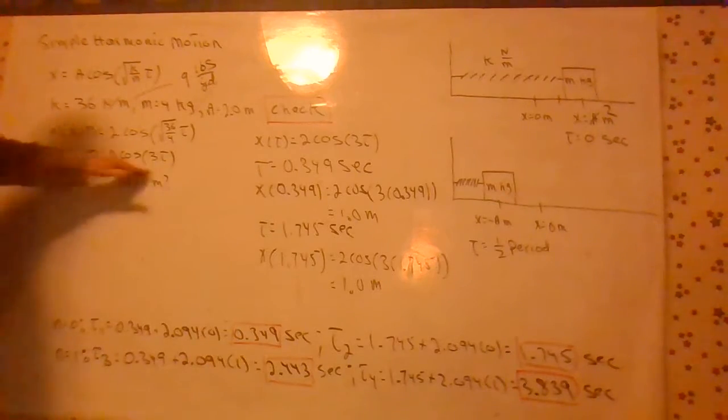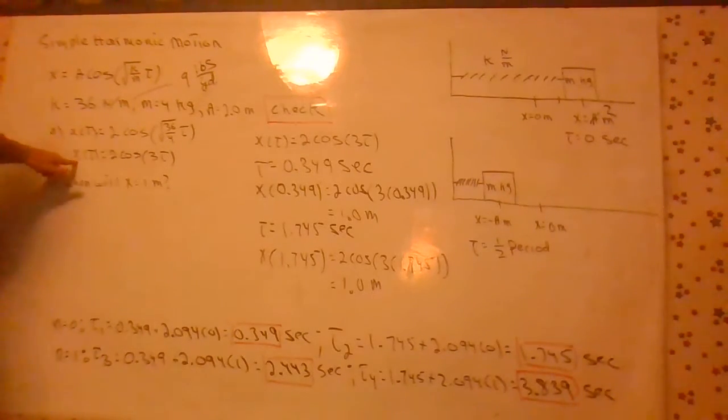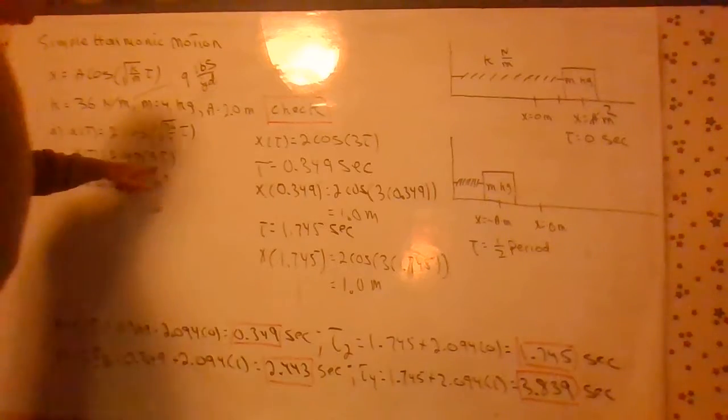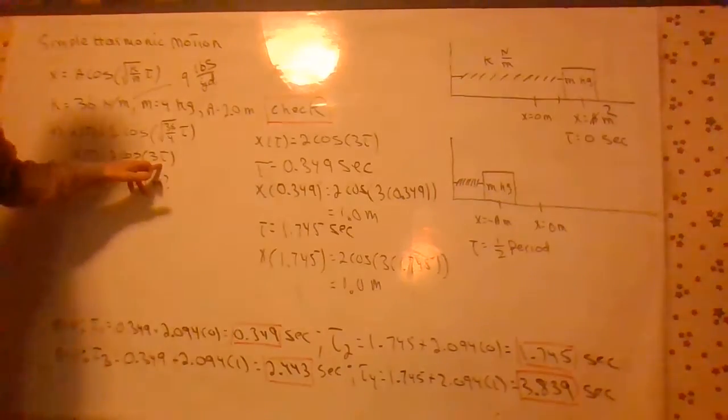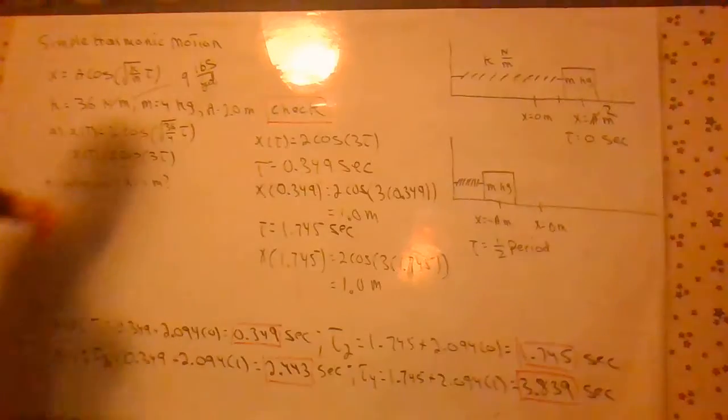We have this cosine function, which gives us the position as a function of t. 2 cosine 3t, this thing's going to oscillate back and forth, back and forth.